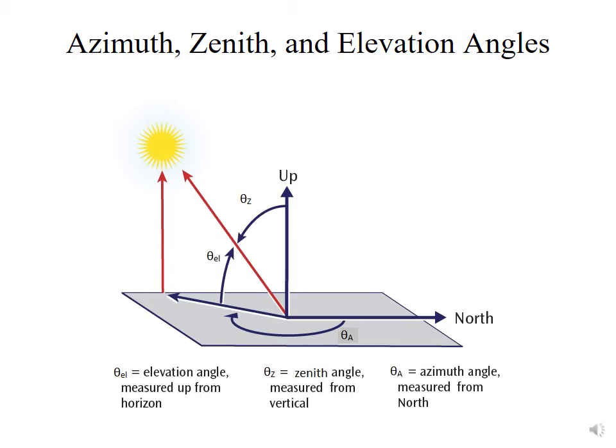The elevation angle will be maximized in summer and minimized in winter. Alternatively, we can define the zenith angle as the angle between straight up and the direction of the sun. Together, the elevation angle and the zenith angle make a right angle — 90 degrees. We also have the azimuth angle, which is the angle looking north-south-east-west to locate where the sun would be. It is defined as the angle from pointing north, so north is zero degrees, directly to the east would be 90 degrees, directly to the south would be 180 degrees, and so forth.